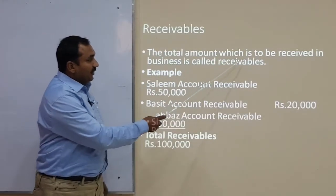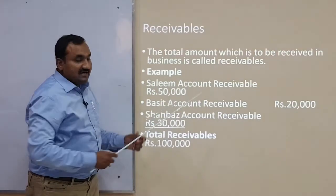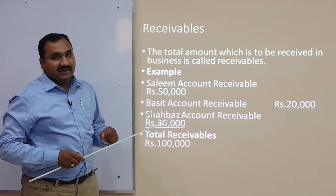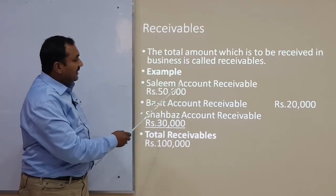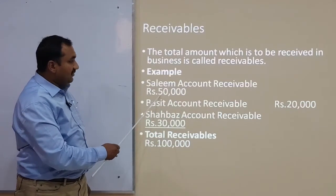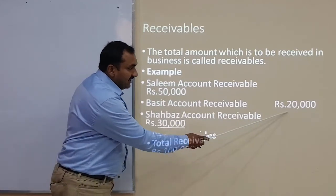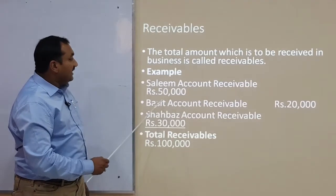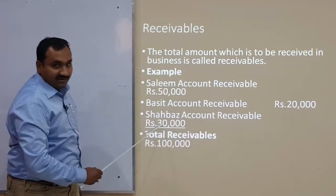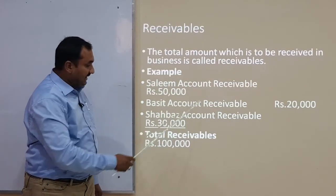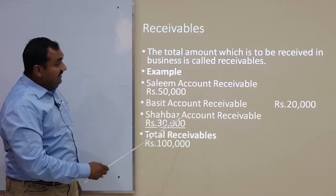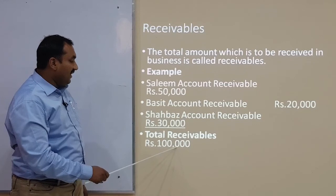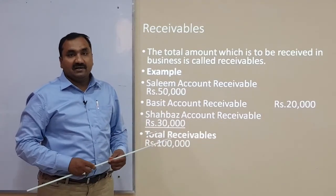Receivables: the total amount which is to be received in business is called receivables۔ Receivable کا مطلب ہے کاروبار نے جتنی amounts وصول کرنی ہیں — short term یا long term — وہ ساری receivables ہیں۔ Examples: Salim account receivable Rs. 50,000؛ Basit account receivable Rs. 20,000؛ Shahbaz account receivable Rs. 30,000۔ تینوں کو sum کریں تو total receivable بنتا ہے Rs. 1 lac۔ امید ہے آپ کو سمجھ آئے ہوں گے، thank you۔